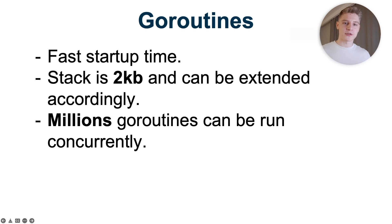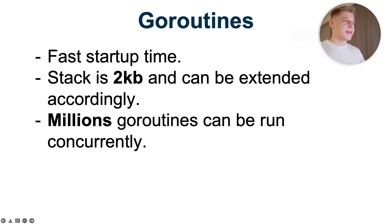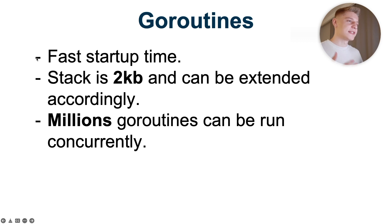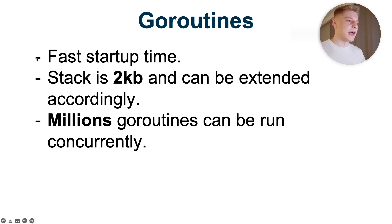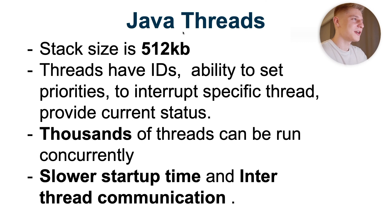Now we'll compare the performance of Golang and Java. First, let's compare goroutines and Java threads. Goroutines are a special case of coroutines managed by the Go scheduler. They have faster startup time than Java threads. The minimal stack size is 2 kilobytes and can be extended accordingly, so a Go program is able to run millions of goroutines concurrently.